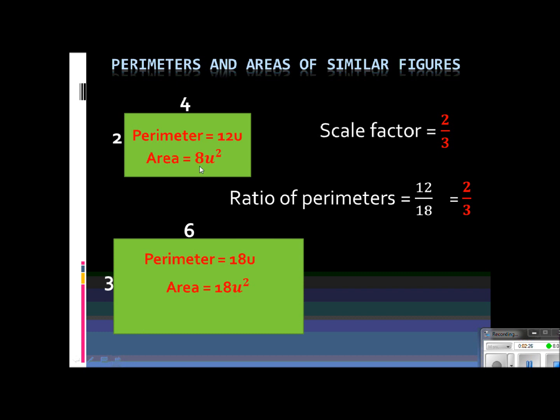Now let's put these two areas in a ratio, 8 over 18. And of course, we would want to simplify the 8 over 18. Both the top and the bottom are divisible by 2, would give us 4 over 9. Now this is where I need you guys to put on your thinking caps. I want you to take a look at this 2 over 3 and 4 over 9. What relationship do you see between the ratio of the perimeters and the scale factor and the ratio of the areas?